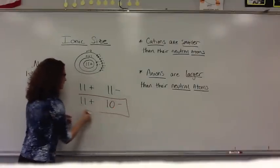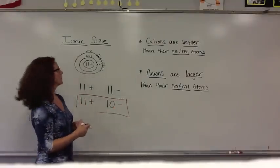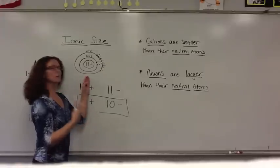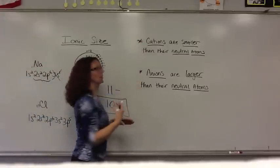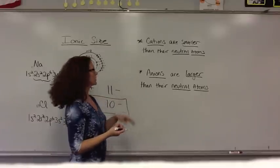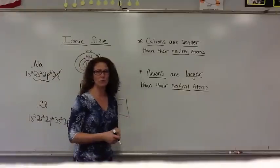The net charge of this particle now is a positive one charge, and when something becomes a plus one charge, we call it a cation. A cation is the positive ion, which we've talked about before.